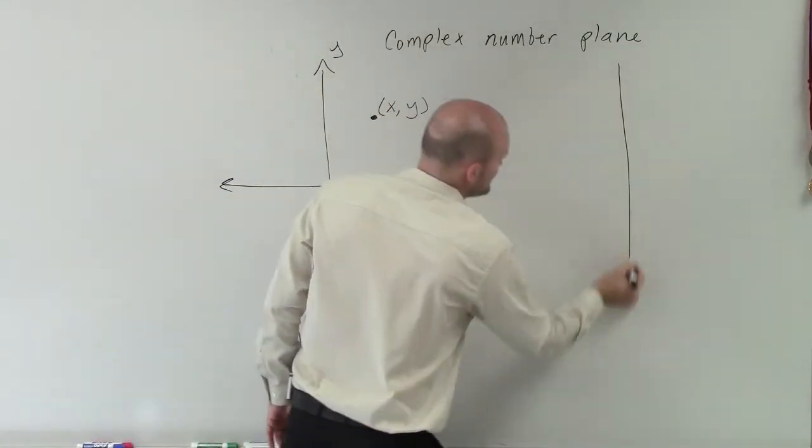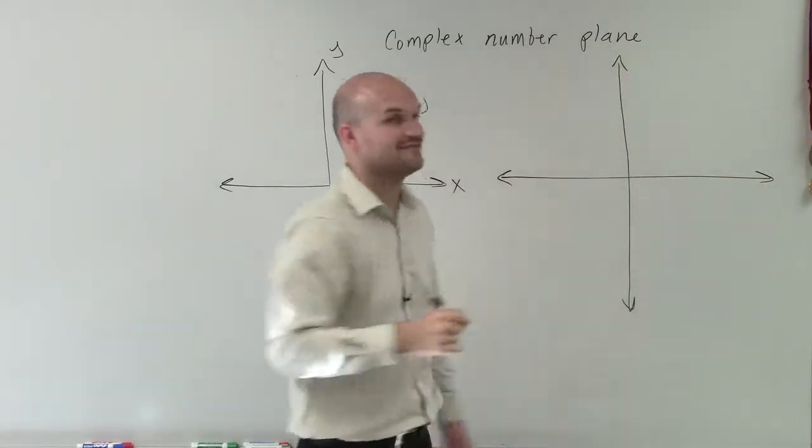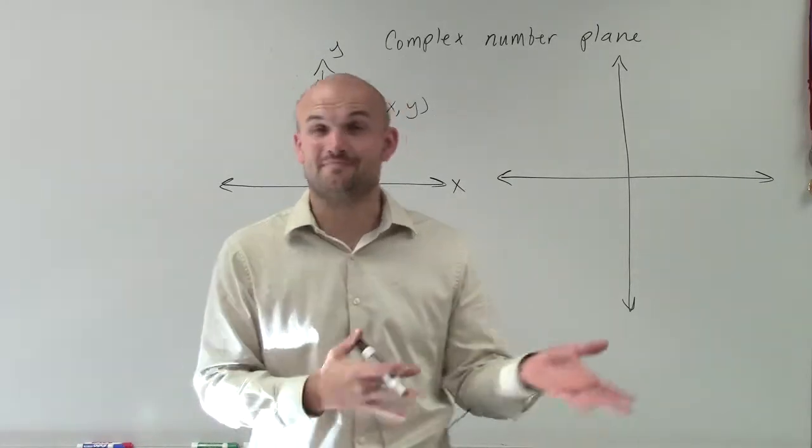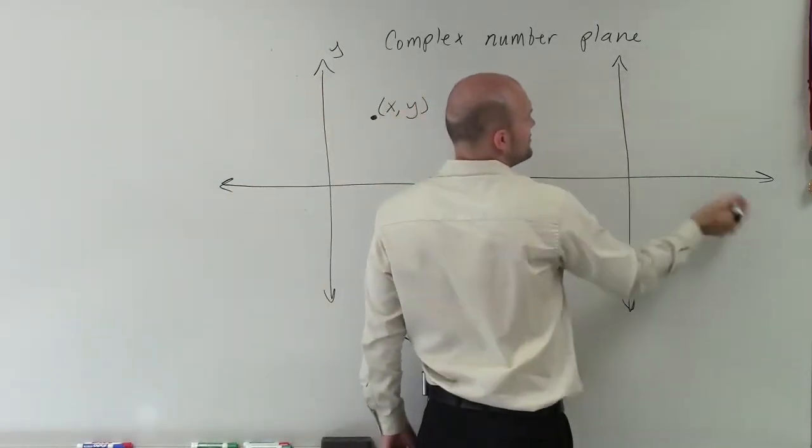So the complex number plane is a way for us to graph complex numbers. And you might say, well, how are you going to graph numbers that are going to have an imaginary part? Well, what we do is we create two axes.